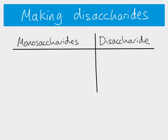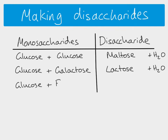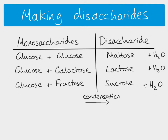Glucose and glucose combine together in a reaction to make maltose and water. Glucose and galactose react together to make lactose and water. And glucose and fructose react together to make sucrose and water.